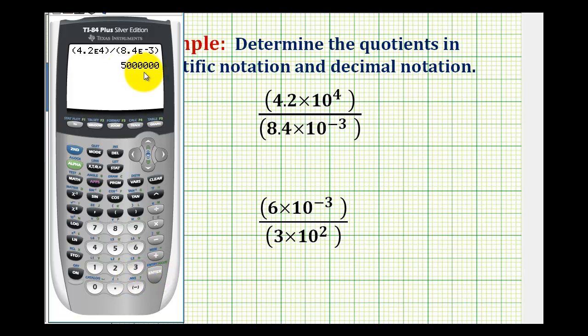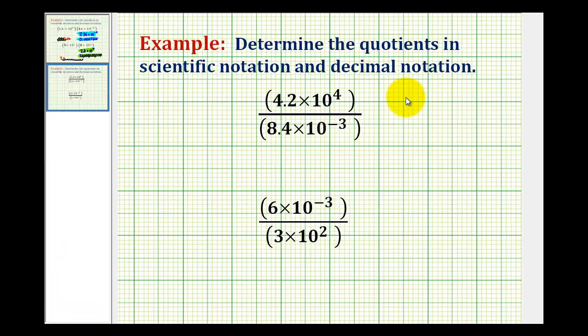So our quotient is given here in decimal notation. So we have 1, 2, 3, 4, 5, 6 zeros. So we have 5 followed by 6 zeros or 5 million.